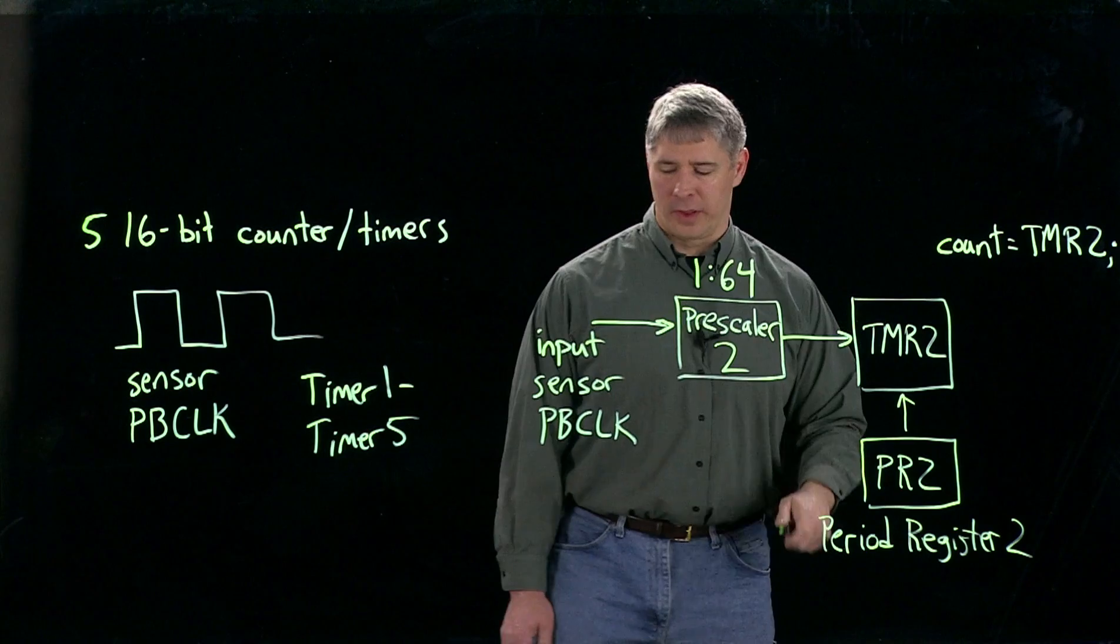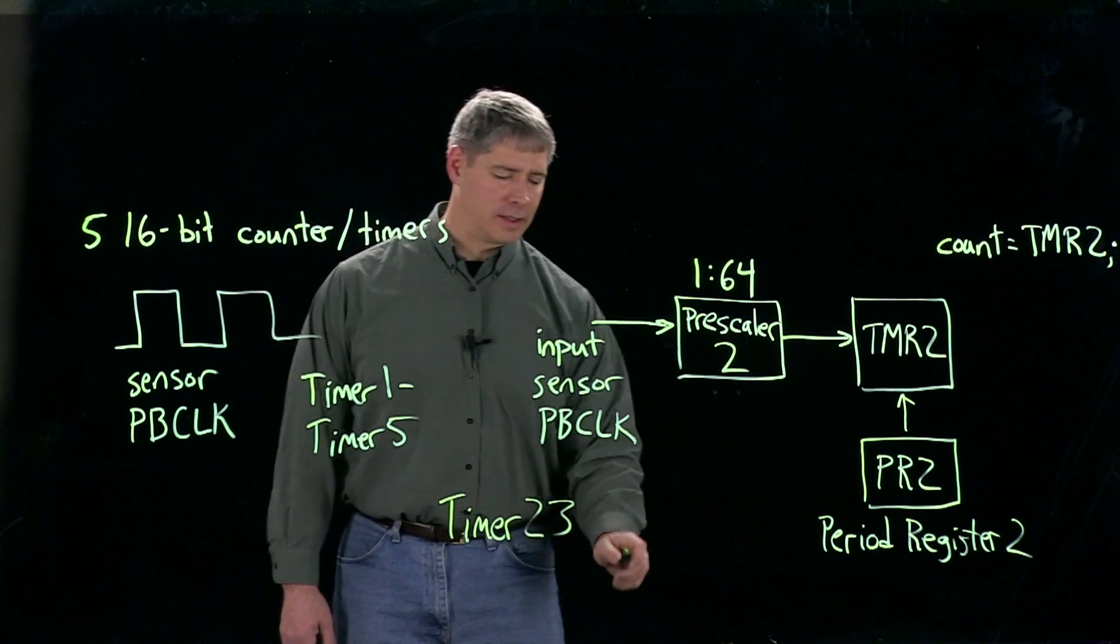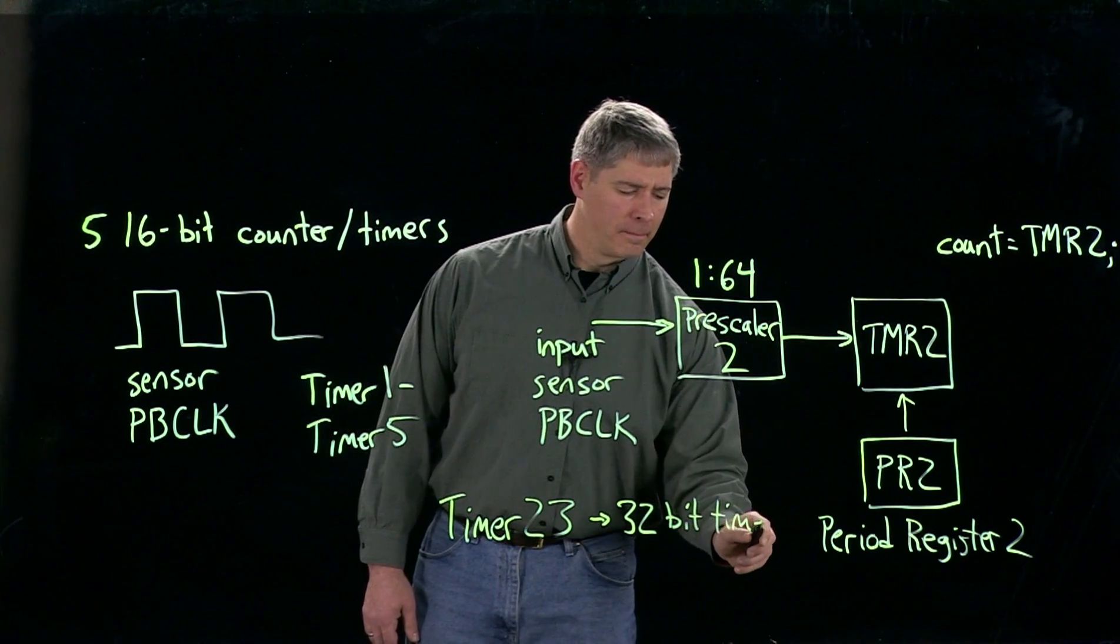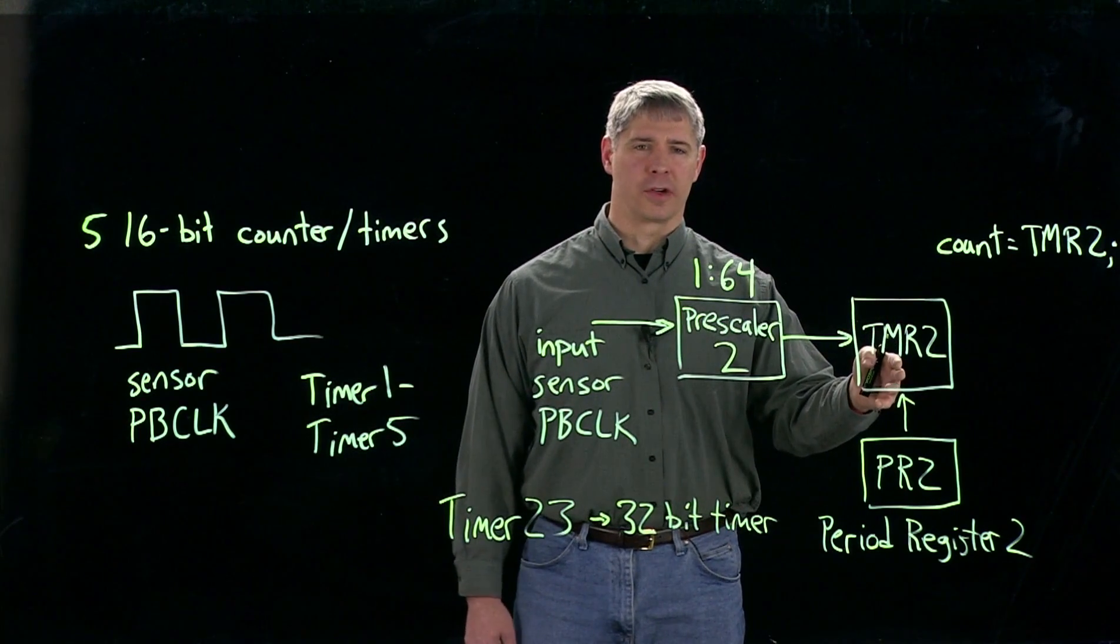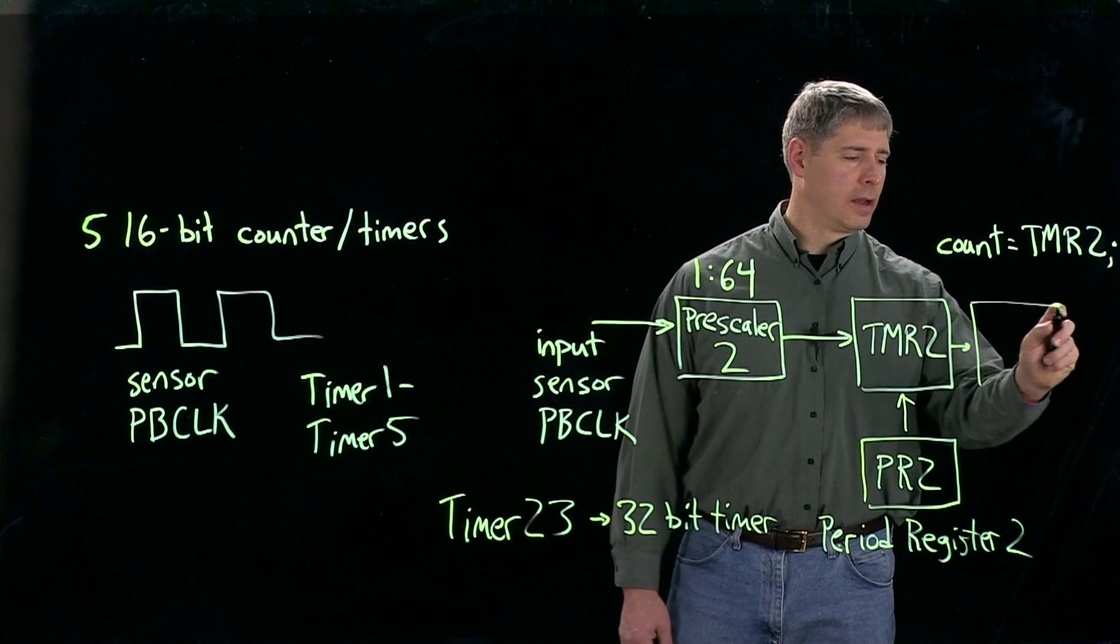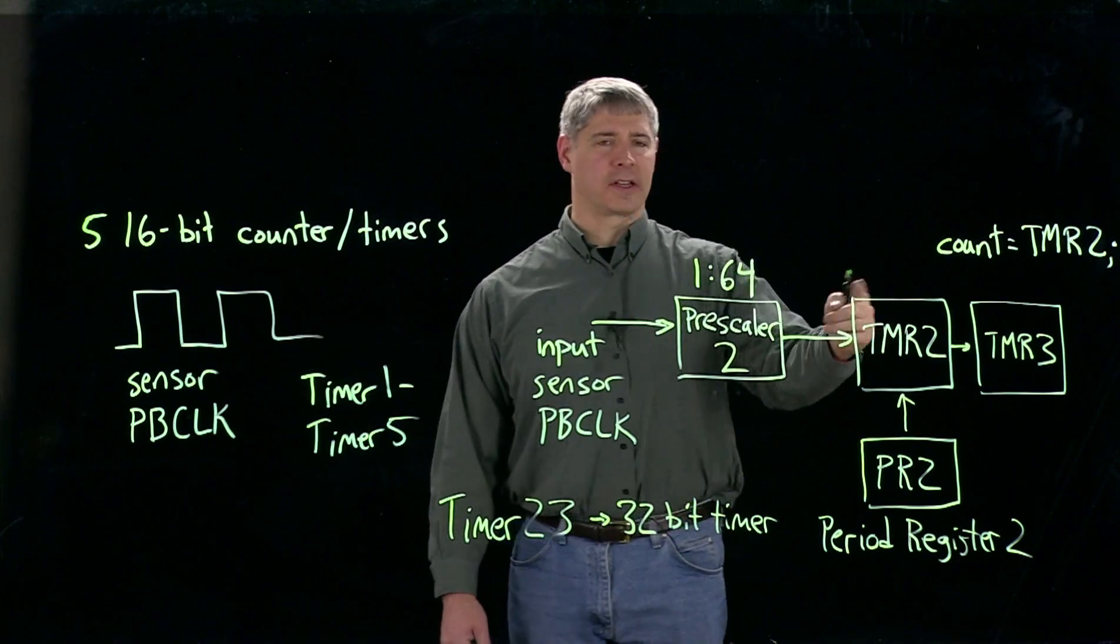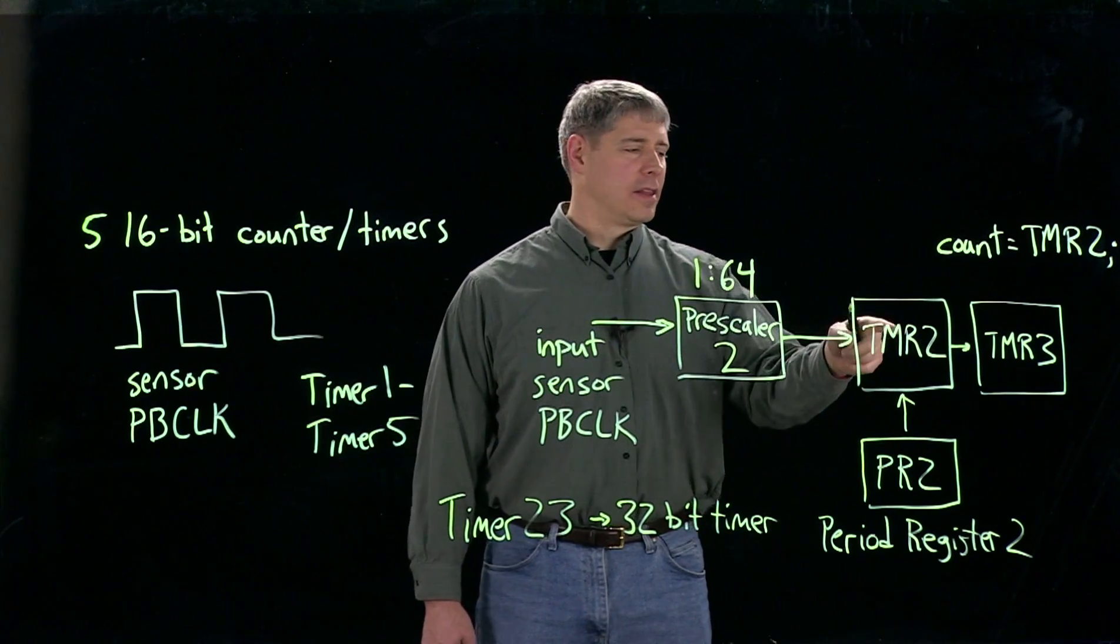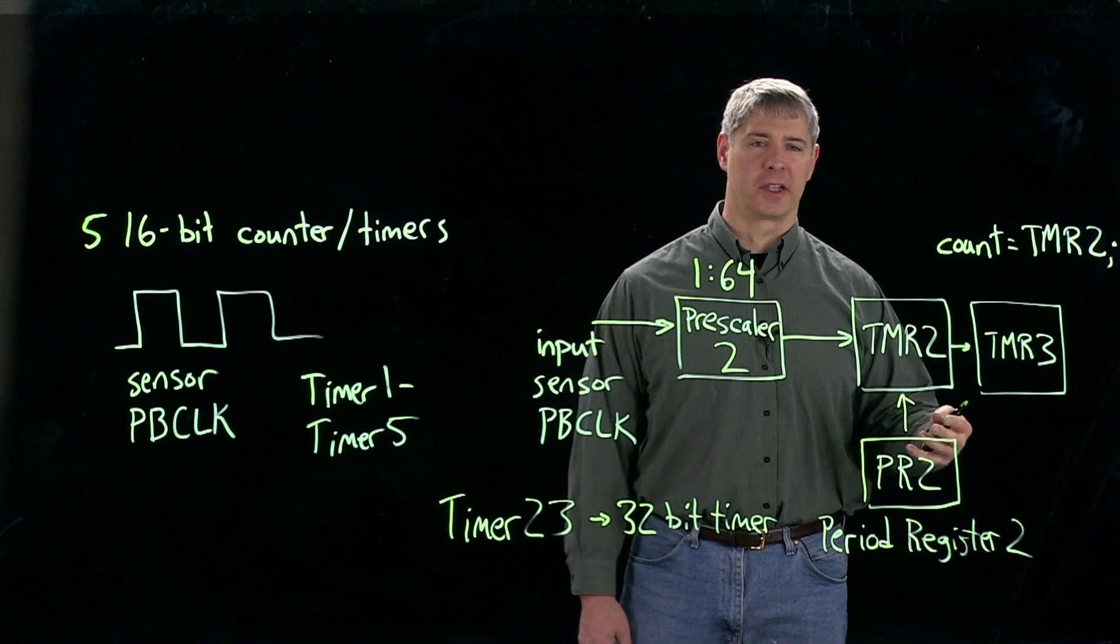One other thing that we can do with timer 2 and 3 is we can make a 32-bit timer. What that means is that basically when timer 2 rolls over, then it sends a pulse to timer 3. So I'll just connect it here. This is basically the least significant bits of the count. Once this rolls over at typically 2 to the 16 minus 1, then it's going to send a pulse to timer 3. And now the 16 bits of timer 3 are going to hold the 16 most significant bits.